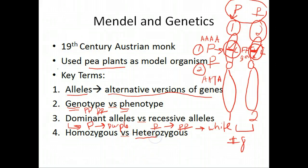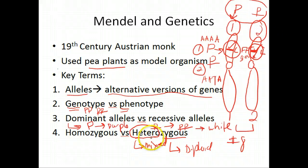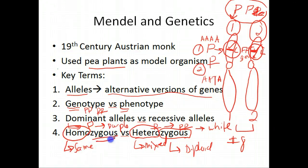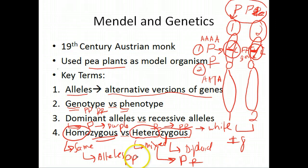When you have a mixture of different alleles, you get something called heterozygous — literally, the zygote which is diploid has mixed alleles, so it's a mixed zygote. Now if I change this and designate both chromosomes as big P, I'd be in a homozygous situation. Homo means same, so it's a zygote with the same alleles. Big P, big P is homozygous, whereas big P, little p is heterozygous.